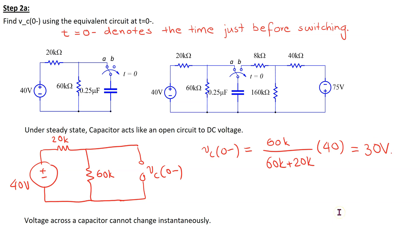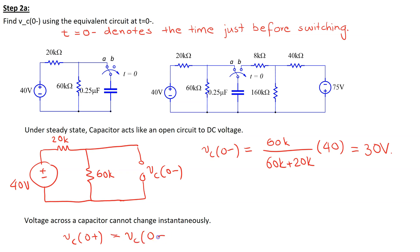It is also a property of a capacitor that voltage across a capacitor cannot change instantaneously. Therefore, Vc(0+), which is the voltage across the capacitor just after switching takes place, is equal to Vc(0−), which is equal to 30 volts.